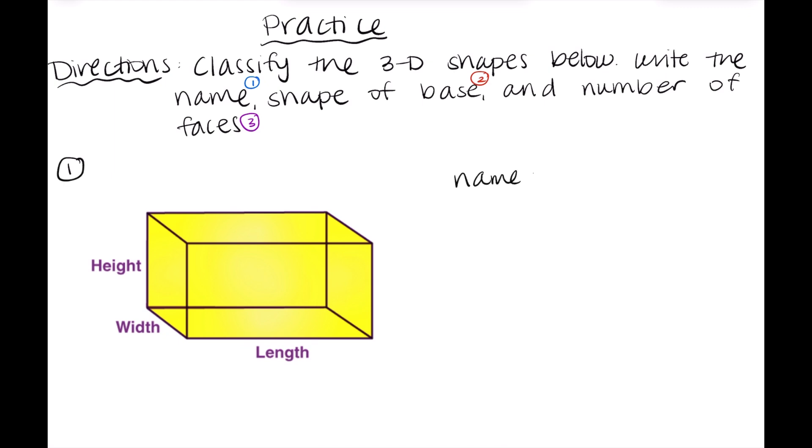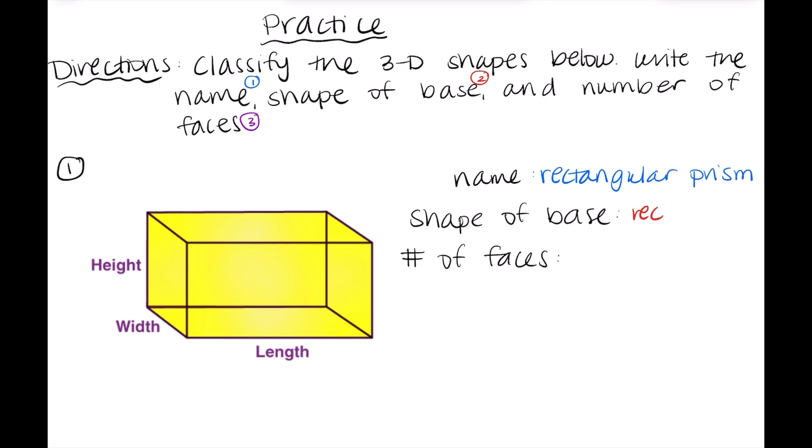So for our first example here, this is our visual. We again need name, shape of the base, and number of bases. So the name of this shape would be a rectangular prism. Why? Because the shape of the base, which is our next part of the question, is a rectangle, right? And it's not a pyramid, right? Because it doesn't all point to one vertex. So it's just a rectangular prism. Now counting up all the faces, we have six.